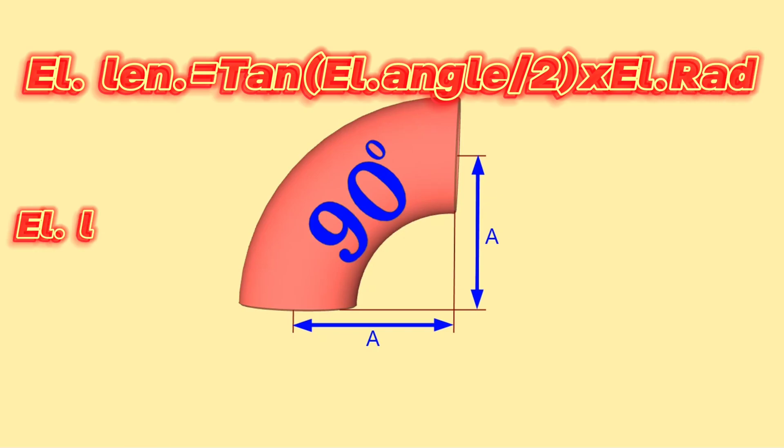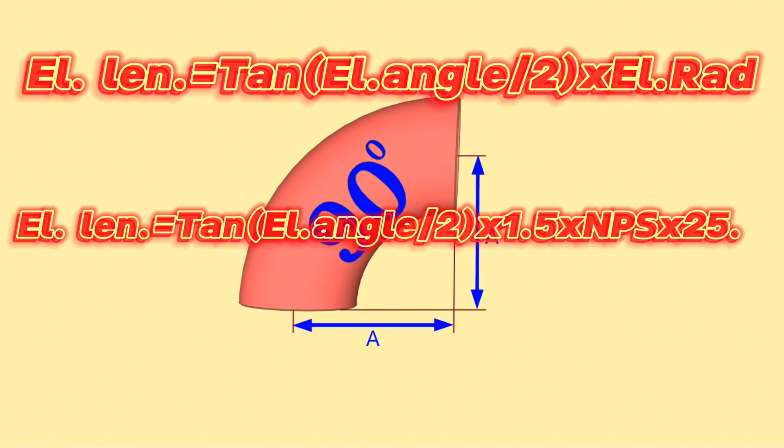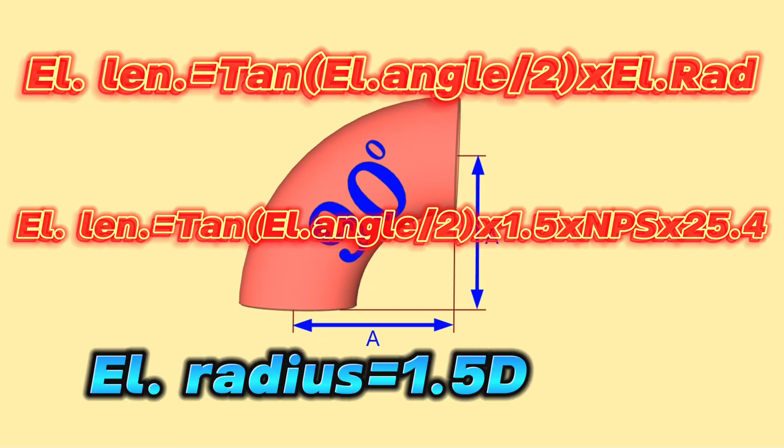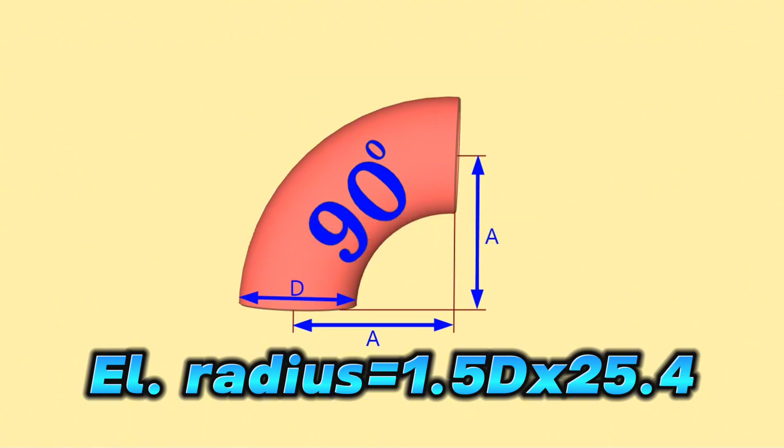Formula 2: Elbow length equals tangent of elbow angle divided by 2, times 1.5, times NPS, times 25.4. From these formulas we can see long radius elbow radius equals 1.5 times D times 25.4. Long radius elbow means that the curvature radius of elbow is 1.5 times the pipe diameter.